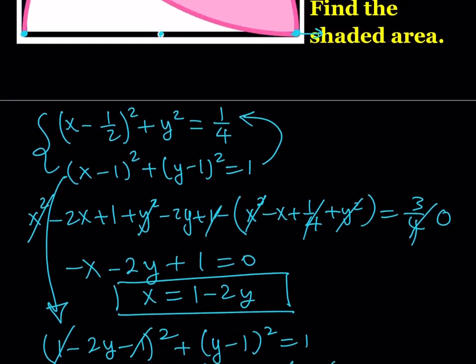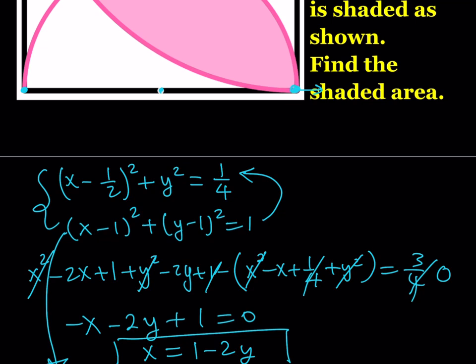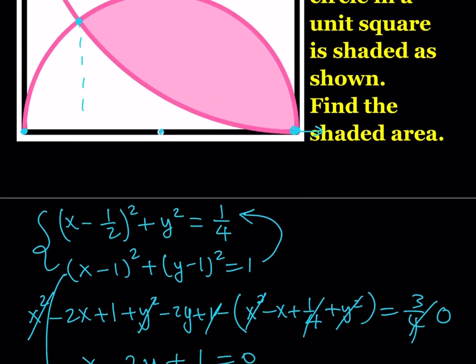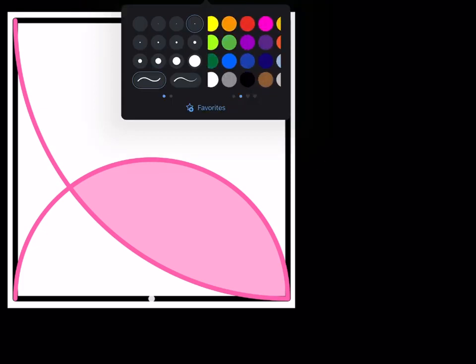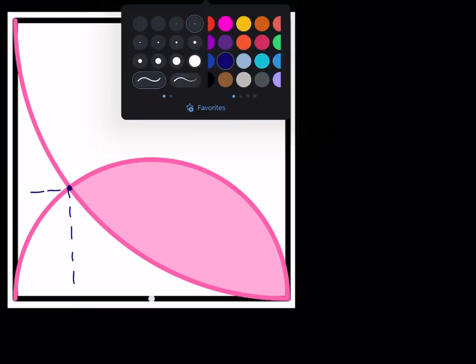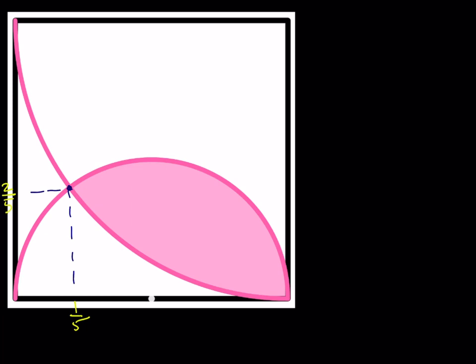y = 0 corresponds to the intersection point (1, 0) that we already knew about. We need the other intersection point, which has a positive y-coordinate. With y = 2/5, we get x = 1 − 2(2/5) = 1/5. So the intersection point we need is (1/5, 2/5). Let's put that on the picture and proceed. The x-coordinate is 1/5 and the y-coordinate is 2/5.